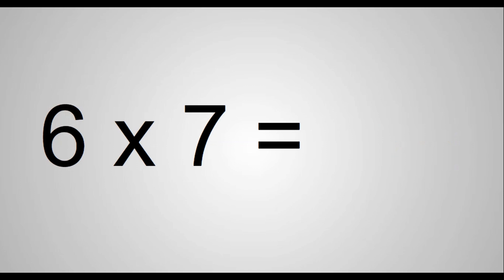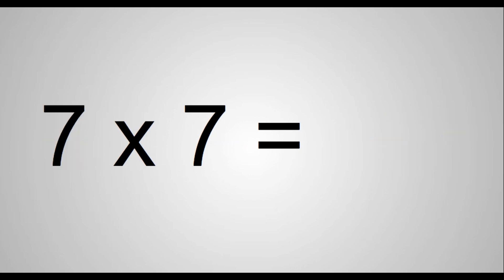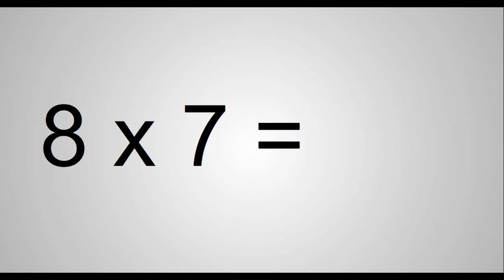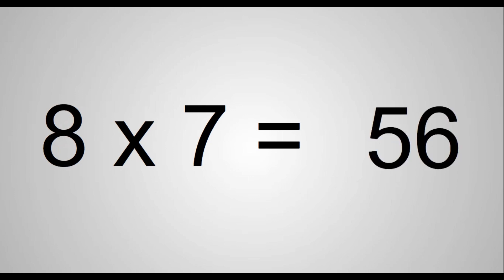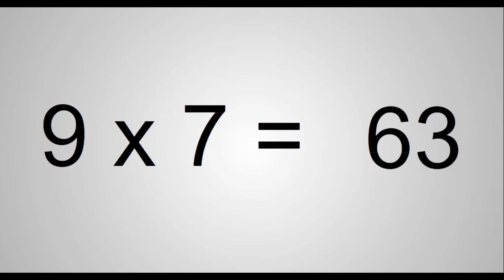6 times 7 equals 42. 7 times 7 equals 49. 8 times 7 equals 56. 9 times 7 equals 63.